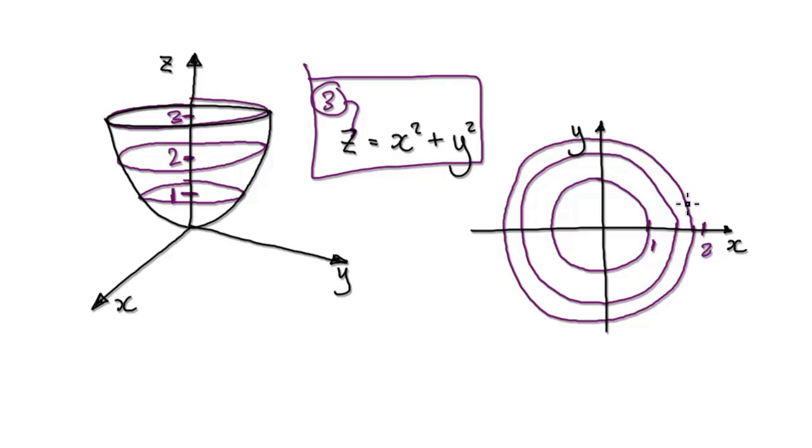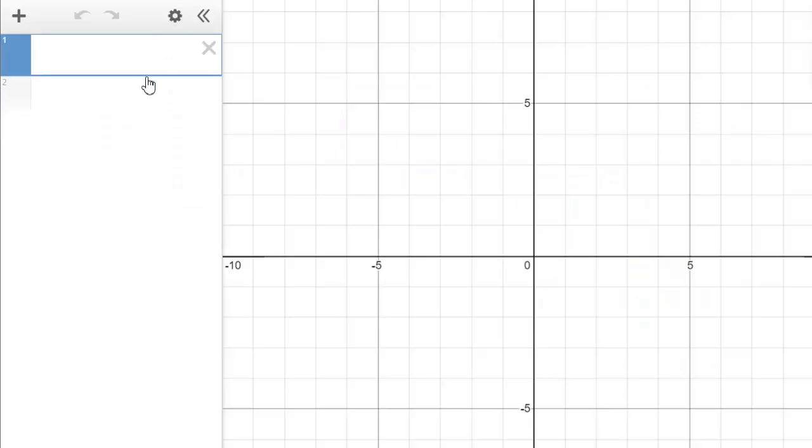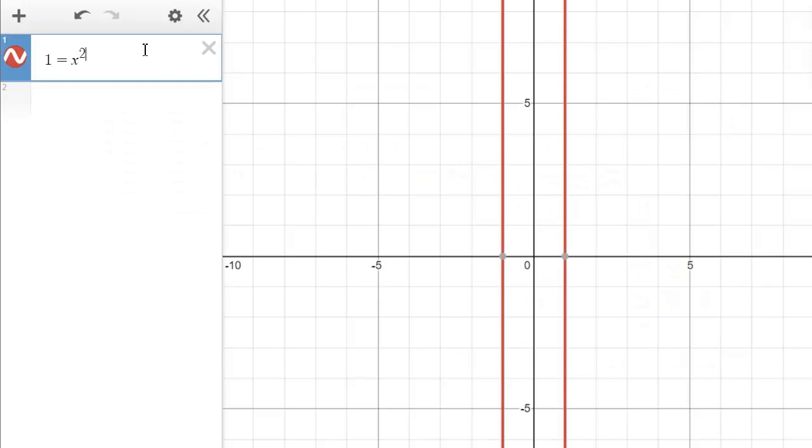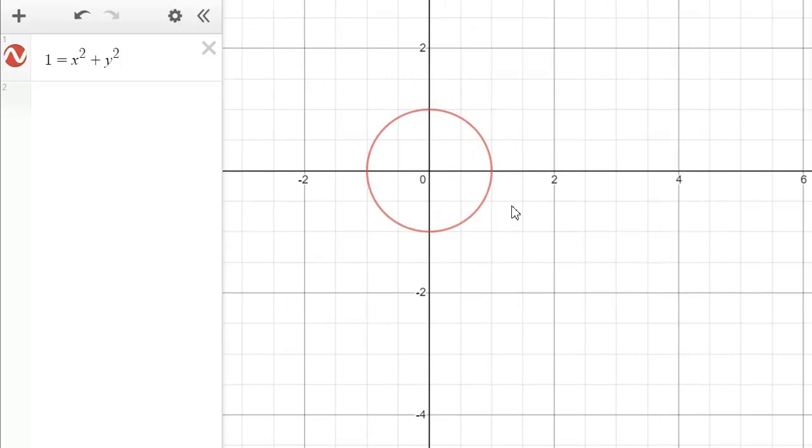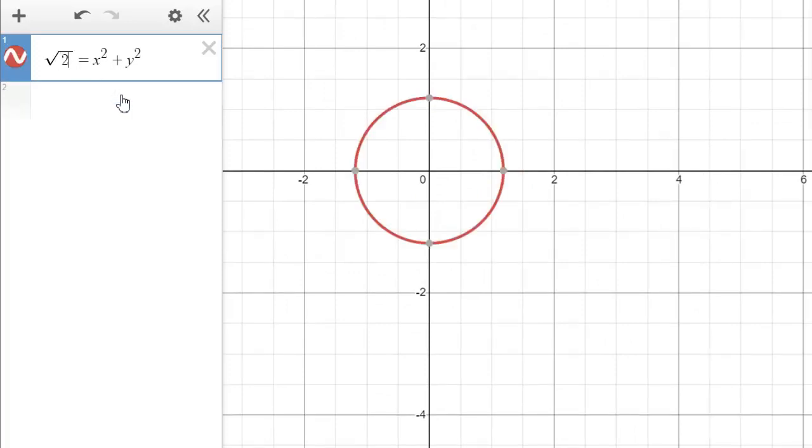So let's draw this in Desmos. In Desmos, if you punch in 1 equals x squared plus y squared, it will look like this. So here you have an elevation of 1, meaning you have a circle radius 1. And then if you change this to sqrt(2), then that will give you an elevation of 2.